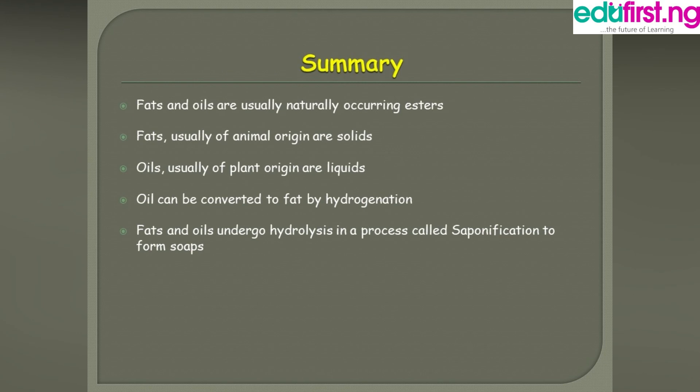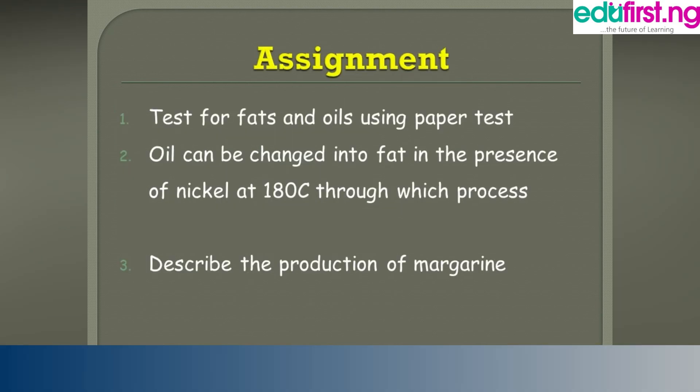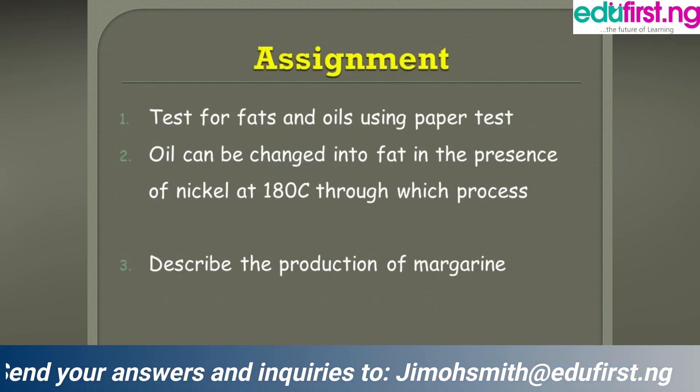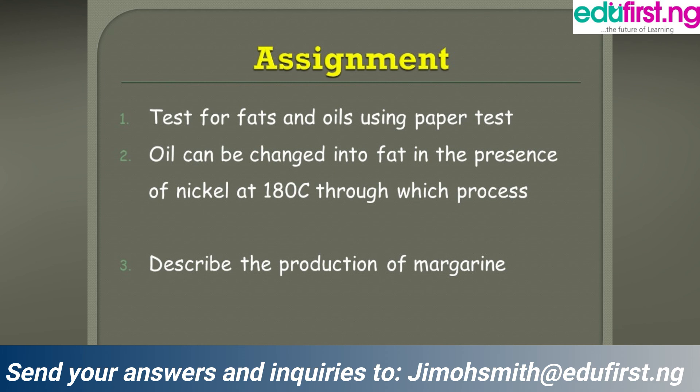In summary: fats and oils are naturally occurring esters. Fats are usually of animal origin and are solids; oils are usually of plant origin and are liquids. Oils can be converted to fats by hydrogenation. Fats and oils undergo hydrolysis in a process called saponification to form soaps. There is an assignment — please do go through it. Thank you for today's class.